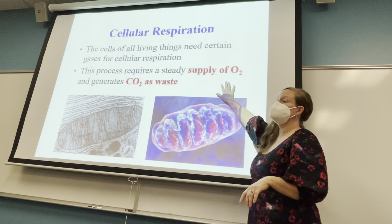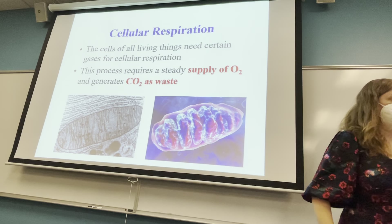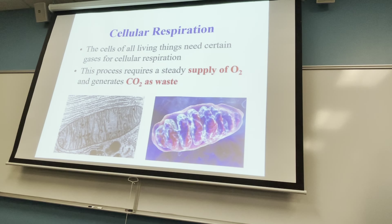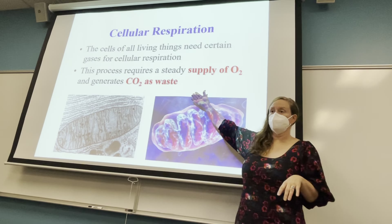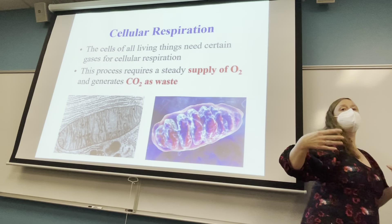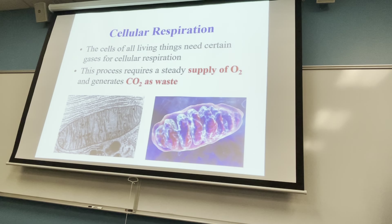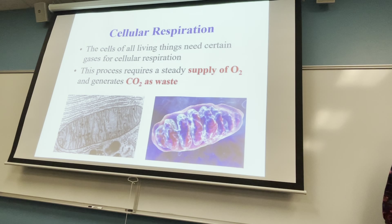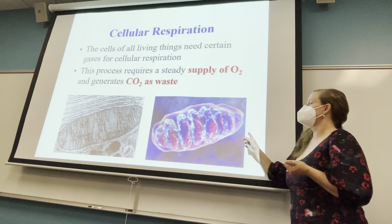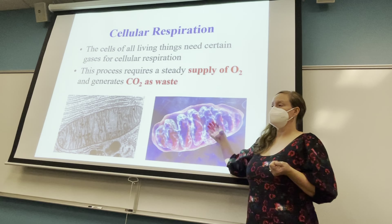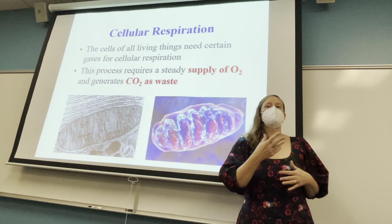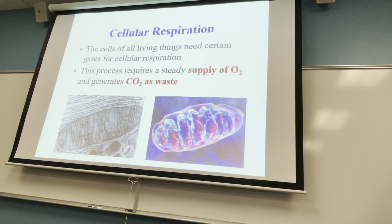We need a constant supply of oxygen for cellular respiration. One of the waste products of cellular respiration is carbon dioxide, so there's a constant need to get oxygen in and carbon dioxide out. The mitochondria are the organelles that process oxygen and food to pump out more efficient sources of energy — ATP — and as a waste product, carbon dioxide.